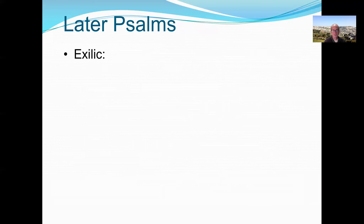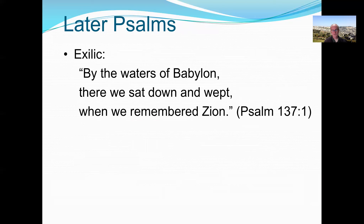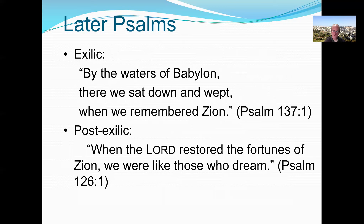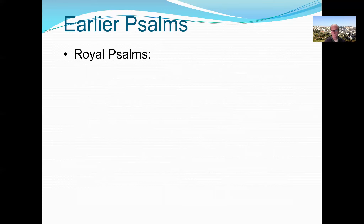An example of an exilic psalm is Psalm 137:1 — 'By the waters of Babylon, there we sat down and wept when we remembered Zion' — clearly written during the Babylonian exile. An example of a possible post-exilic psalm is Psalm 126: 'When the Lord restored the fortunes of Zion, we were like those who dream.' This reads like a psalm from people who had returned from exile and felt it was like a dream come true.